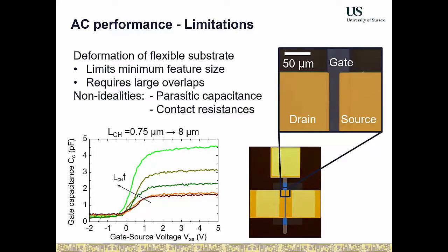Overlaps also influence contact resistance — a larger overlap actually reduces contact resistance, which is beneficial. So we have two competing effects: overlap capacitance and contact resistance. One is proportional to the overlap, the other inversely proportional. We need to figure out the most appropriate way to design the transistors.